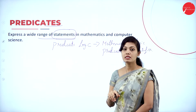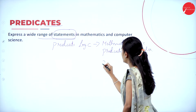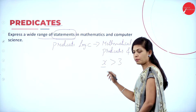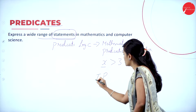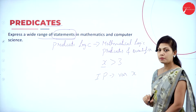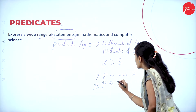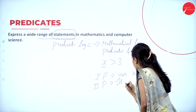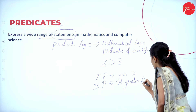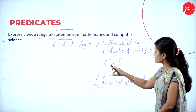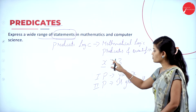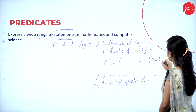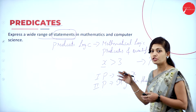Predicate means it is a mathematical statement. Example for predicates: x is greater than 3. Here we have two parts. The first part is variable x, and the second part is 'is greater than 3'. So in the statement 'x is greater than 3', we have two parts: variable x and 'greater than 3'. This represents a predicate — a wide range of mathematical statements.